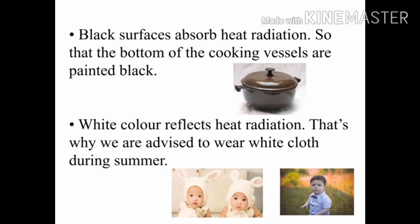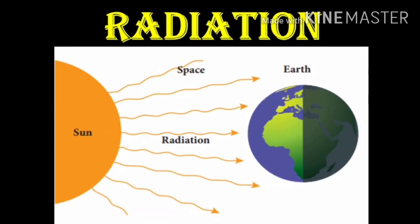Fourth example: white color reflects heat radiation. That is why we are advised to wear white clothes during summer season — white cloth reflects heat. See the diagram: heat energy from the sun reaches the earth by radiation through electromagnetic waves, even across the vacuum of space.